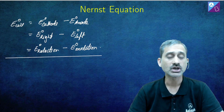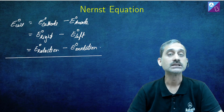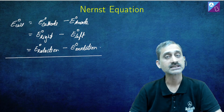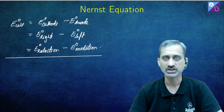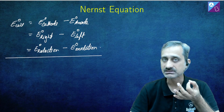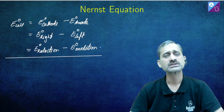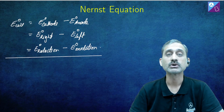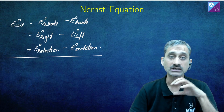Once we have found the standard potential of the cell, now comes the use of the Nernst equation. The Nernst equation describes the relation of the cell potential with the concentration or partial pressure of the various reacting species and products. Reacting species could be gases, solid metals, electrodes, or ions — anything present in the balanced redox equation.